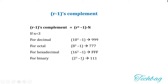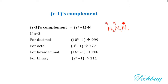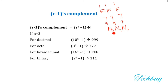So for a 3-bit number, you subtract each digit from 111 in binary, from 999 in decimal, from 777 in octal, or from FFF in hexadecimal. You can conclude that to find the R-1's complement of any number with base R, you subtract each digit in the given number from the largest digit present in that number system.